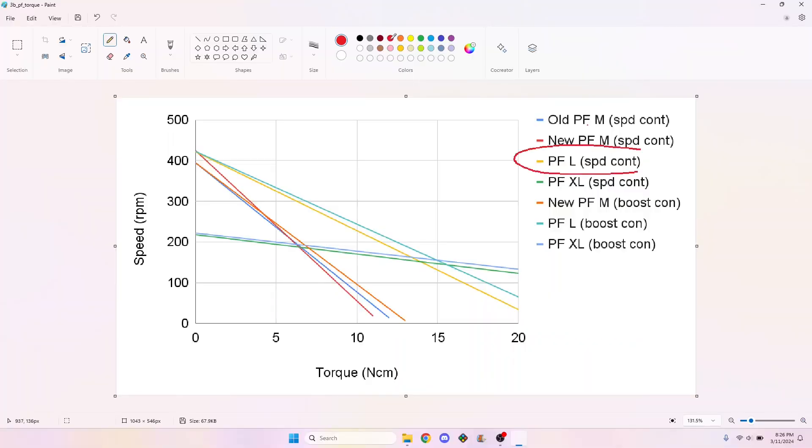This chart shows how torque curves drawn with speed controller data consistently have a slightly steeper slope than those drawn with boost converter data.